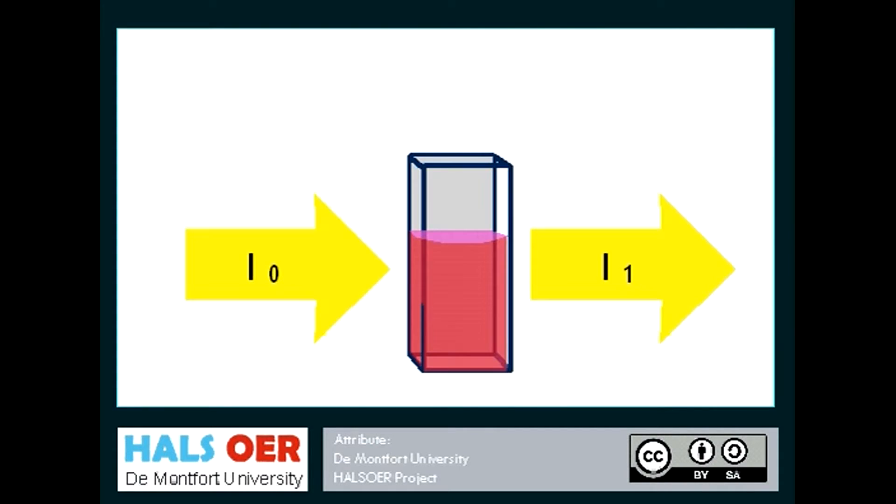A spectrophotometer works by measuring and comparing the intensity of light entering and exiting a sample. Measurements can be expressed as the percentage transmittance, which is the percentage light exiting compared to entering. If all the light passes through a solution, then T is 100%.